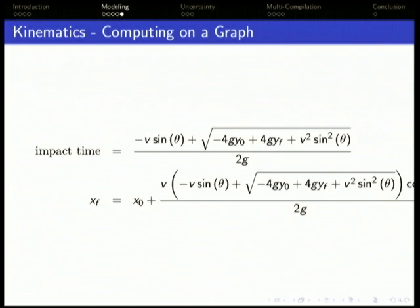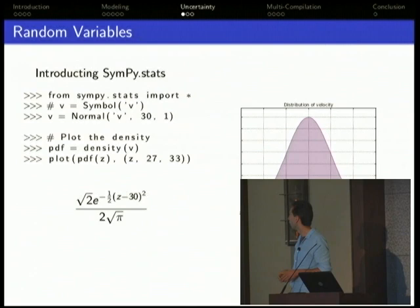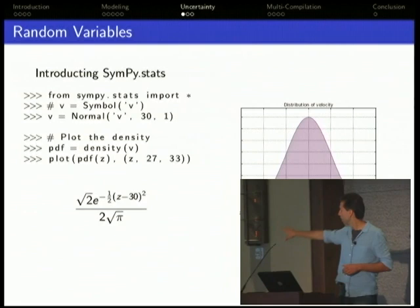I worked on SymPy Stats. SymPy Stats introduces a random variable type into the SymPy language. It's a way to represent your uncertainty in this modeling system. At the top we used to have v equals symbol v as a SymPy variable. Now we say v equals a normal random variable with mean 30 and standard deviation 1. You can ask various questions about that in response. Here we're plotting the density of it. You can also ask questions like, what's the probability v is greater than 31.